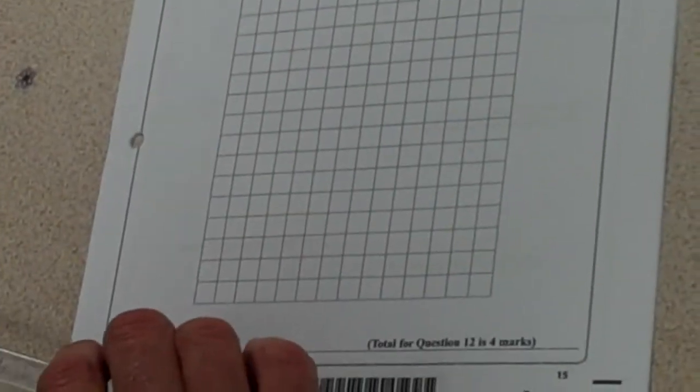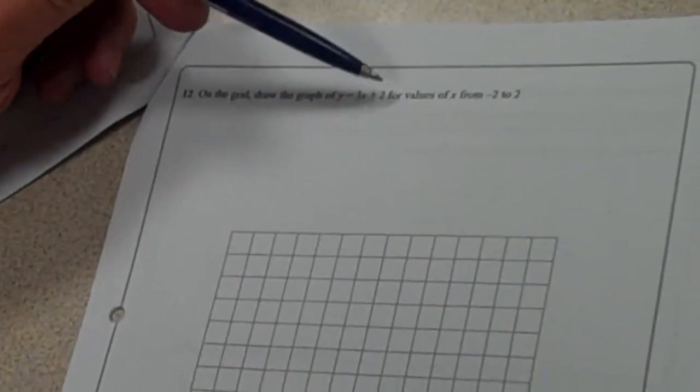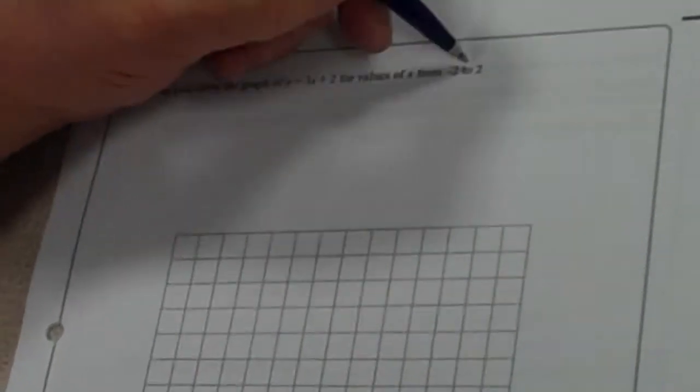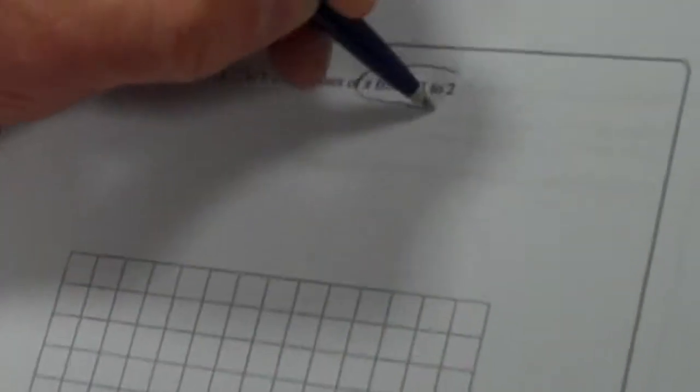OK, so question 12 of the non-calculator paper says on the grid draw a graph of y equals 3x plus 2 for values of x from minus 2 to 2. This is really key. If I draw my graph that goes beyond these values then I will lose some marks.